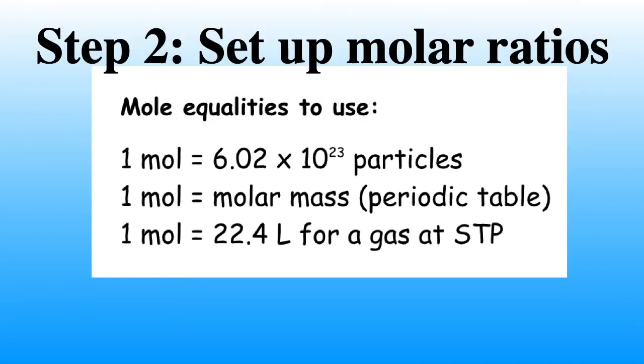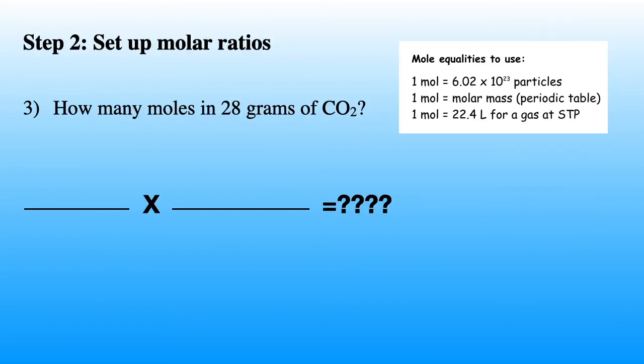In order to do this, we will be using the mole equalities. So to set up our molar ratios, we want to write down what's given. What's given is 28 grams of carbon dioxide divided by 1 times 1 mole of carbon dioxide divided by 44.01 grams of carbon dioxide.